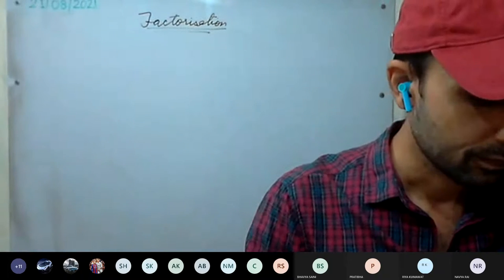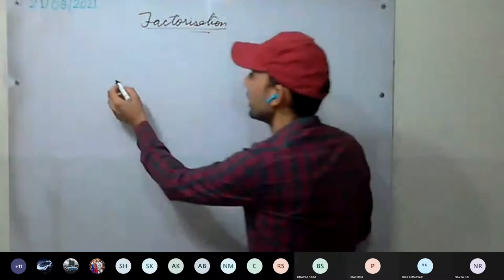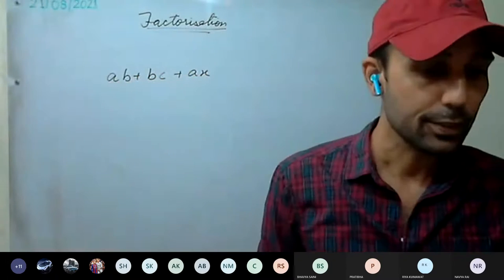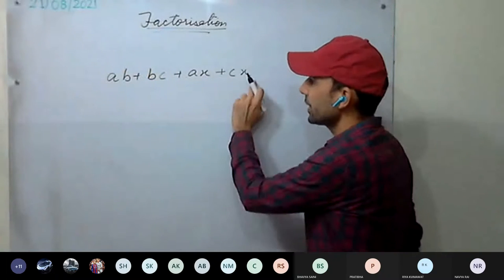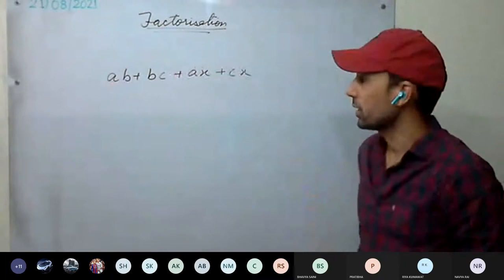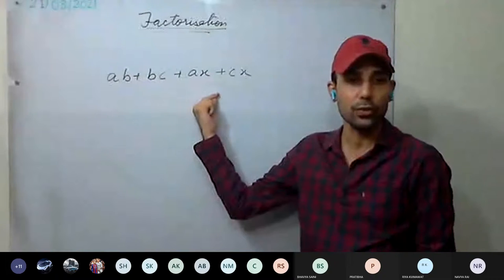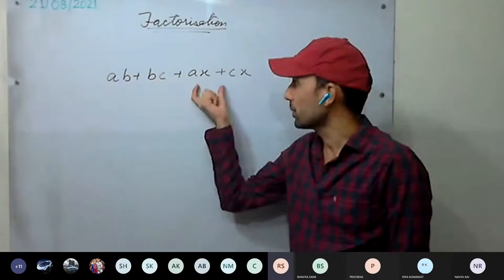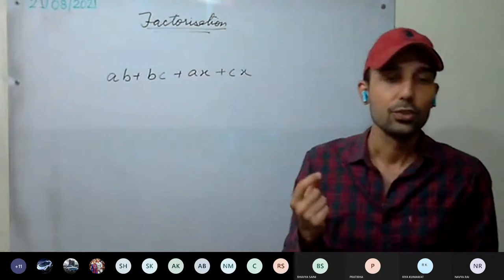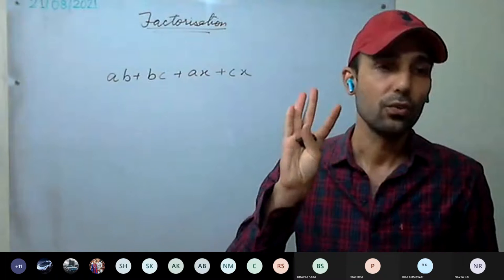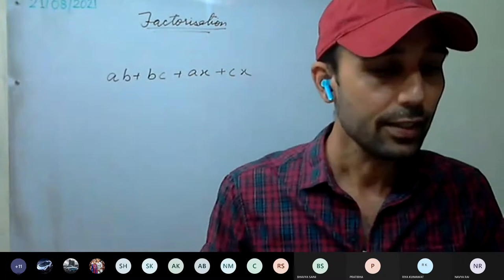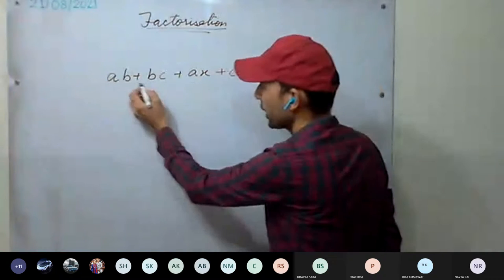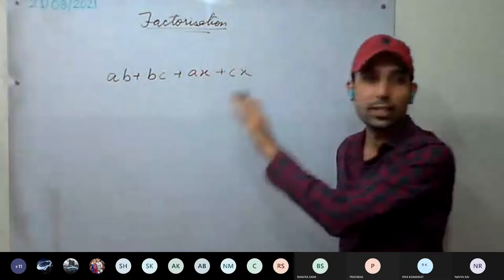Now, if more than two terms are given — for example: ab + bc + ax + cx — is there anything common in all four terms? No. So when more than two terms are given and there is no common factor in all terms, we move to the second method. Four terms, six terms — when even number of terms are given, we go with grouping.